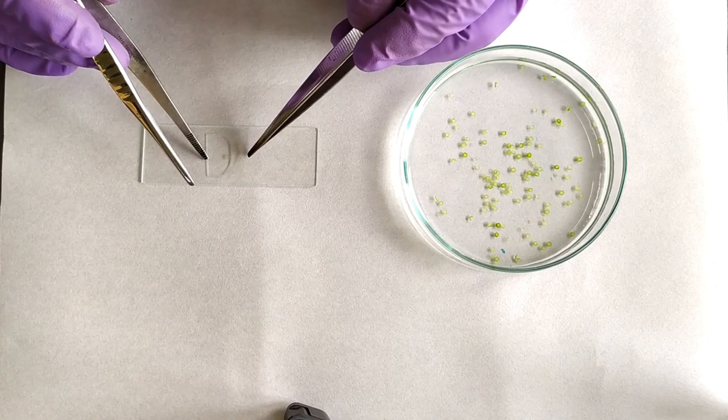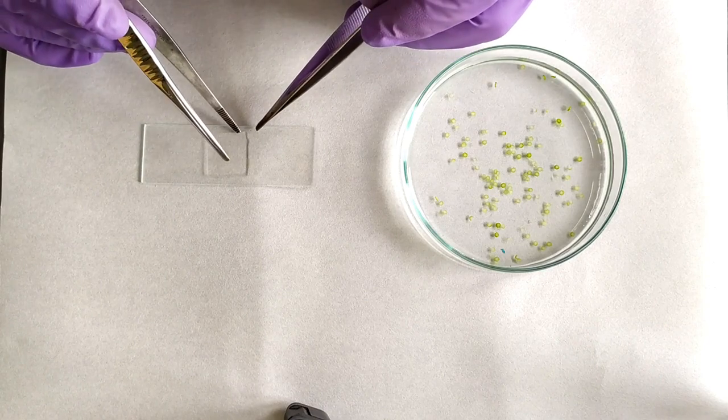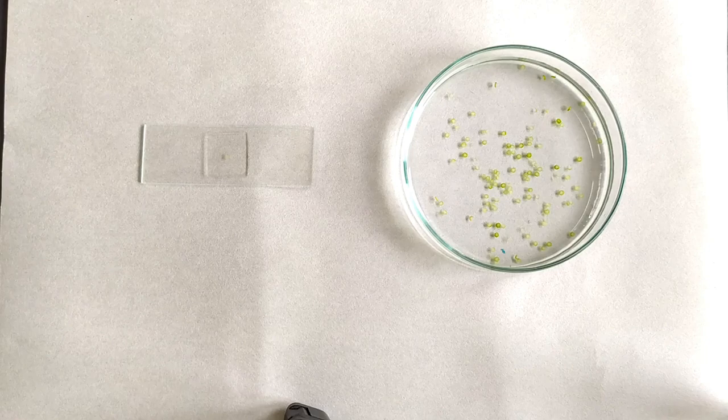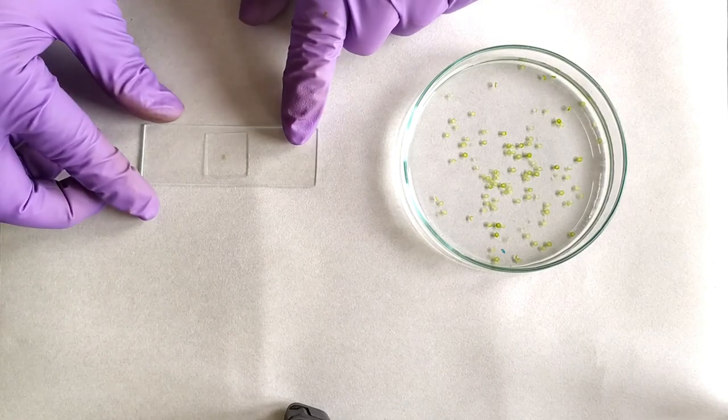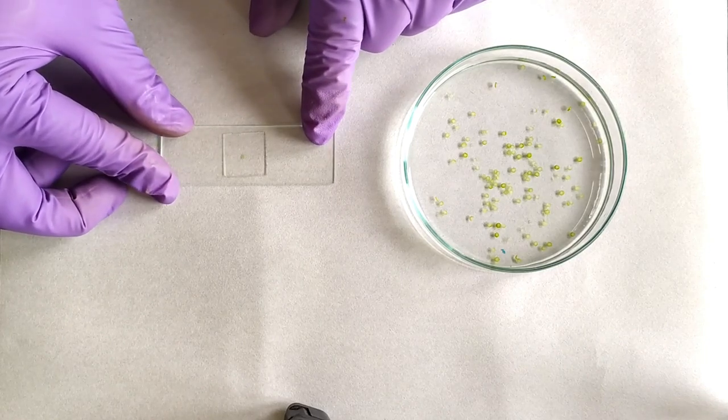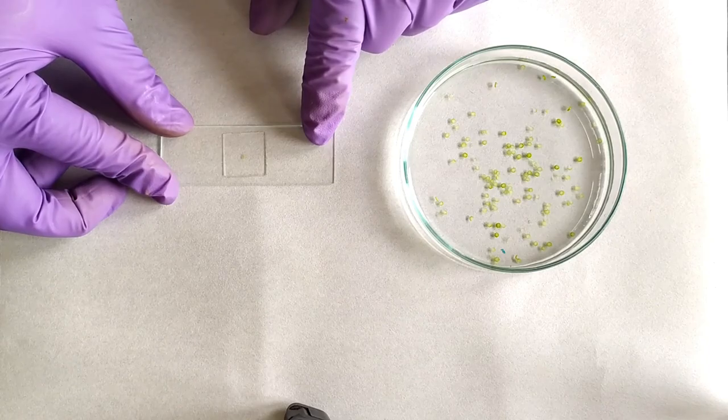When performing mid-air freehand sectioning, remember to wet the cut end of the material and the blade every now and then to minimize water loss and thereby wilting of the material, especially at the cut end during the exercise.